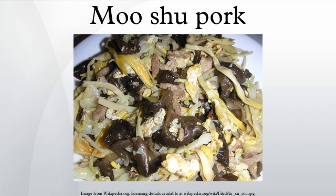In its traditional Chinese version, mushi pork consists of sliced pork tenderloin, cucumber, and scrambled eggs, stir-fried in sesame or peanut oil together with thinly sliced wood ear mushrooms and enoki mushrooms. The dish is seasoned with minced ginger and garlic, scallions, soy sauce, and rice-cooking wine.